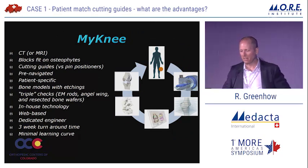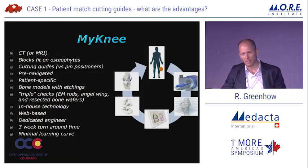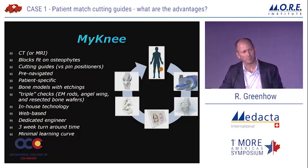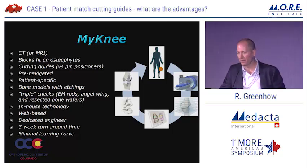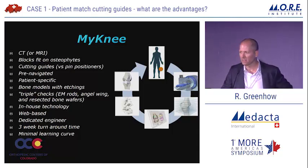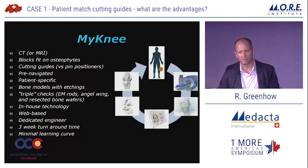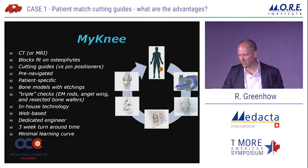What is MyKnee? It's CT or MRI-based — we prefer CT. Dimensionally, CT is more accurate, and there are issues with MRI estimating cartilage thickness. These blocks fit unequivocally on osteophytes. They're actual cutting guides versus pin positioners — pre-navigated patient-specific blocks. Every case comes with bone models with etchings, and there are triple checks in the system.